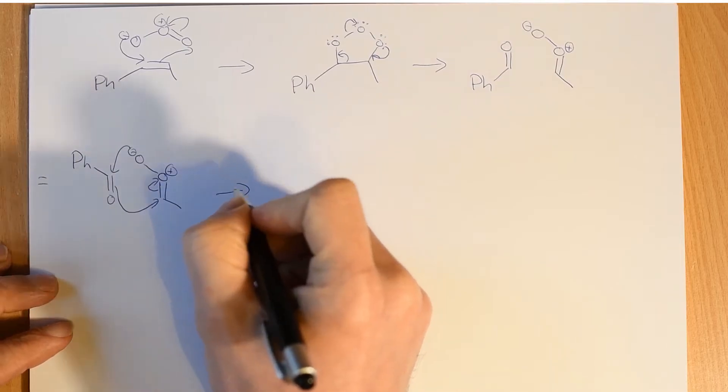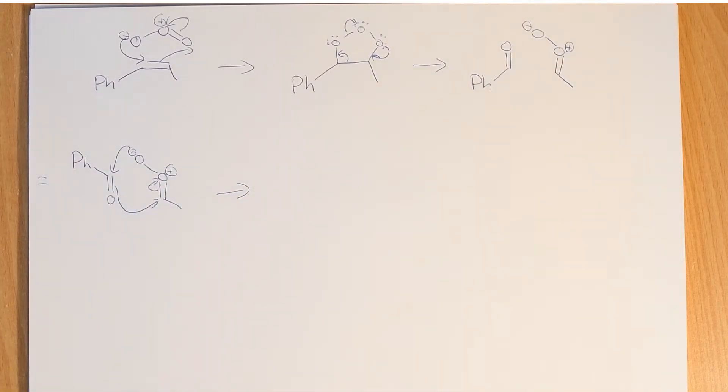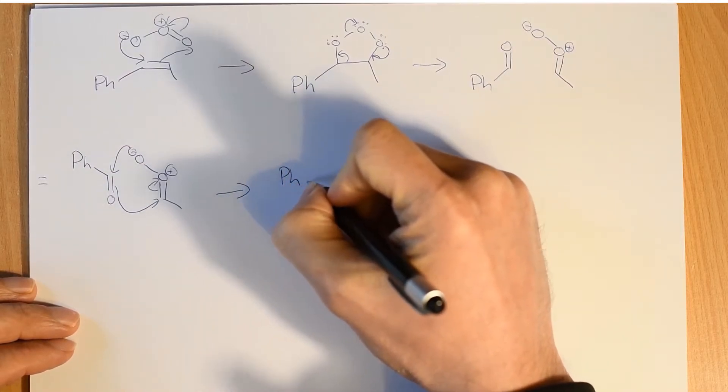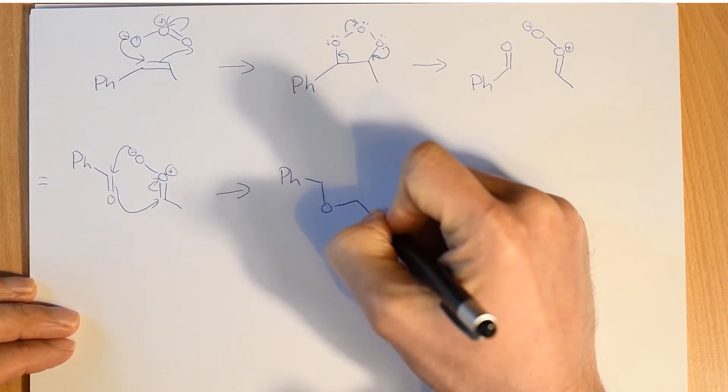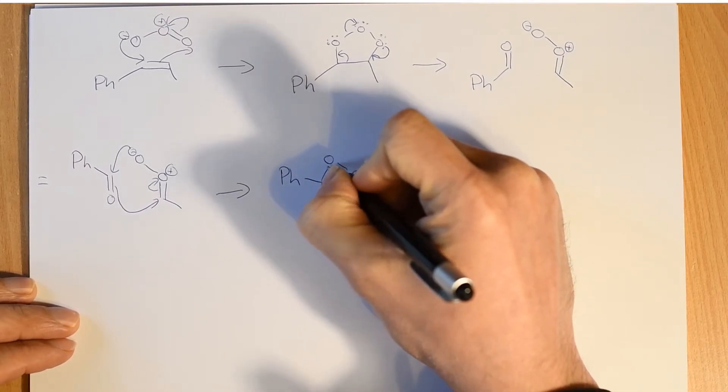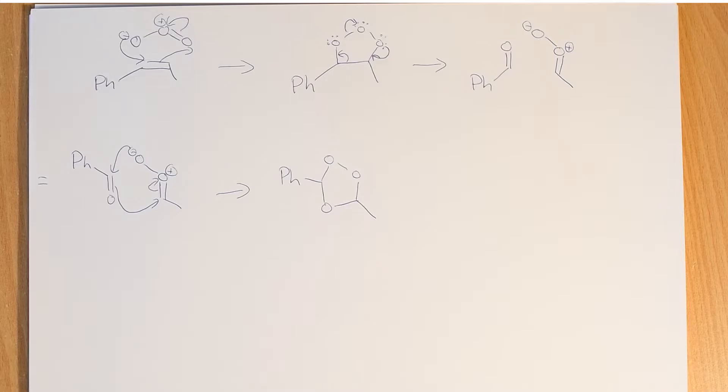And now, instead of having a 1,2,3 trioxalane, we've got a 1,2,4 trioxalane. And 1,2,4 trioxalanes are actually, in some cases, probably not in this case, but in some cases, if you've got very sterically hindered examples, you can isolate them. They're stable enough to be isolated.